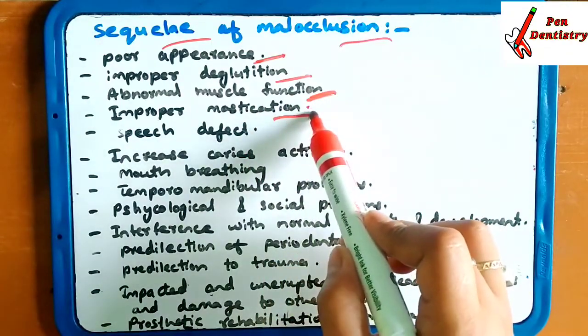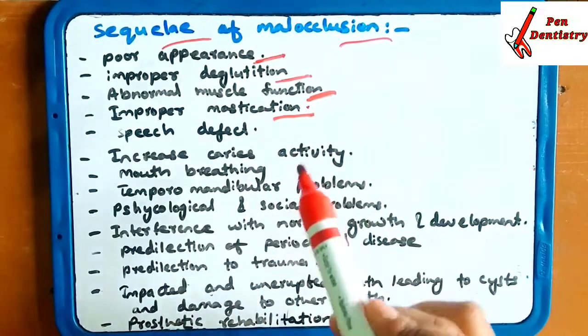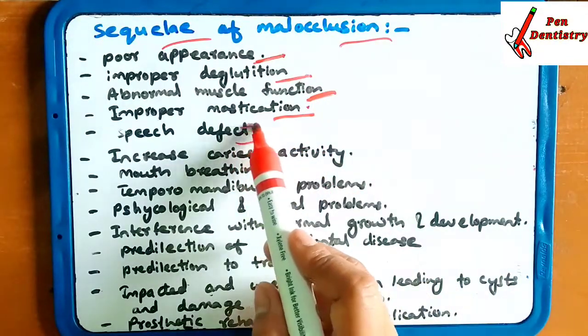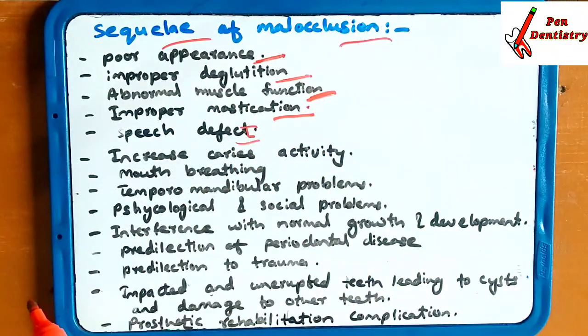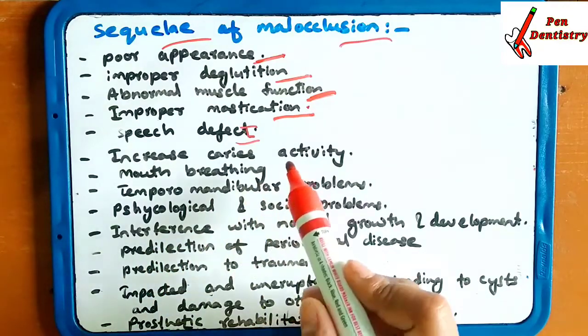Improper mastication — the patient is not able to masticate properly. Speech defect — there will be a speech defect, and the person is not able to speak properly.